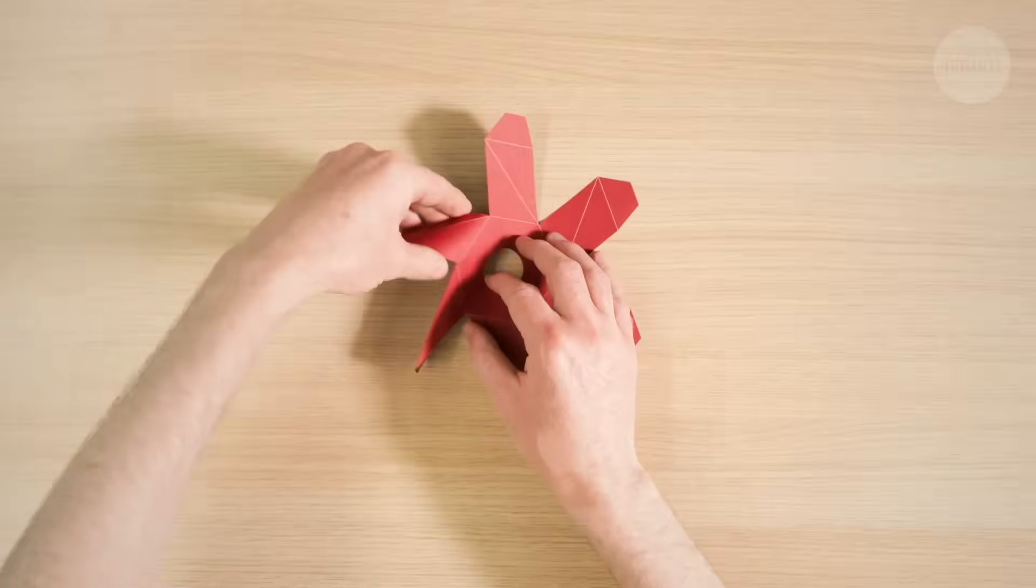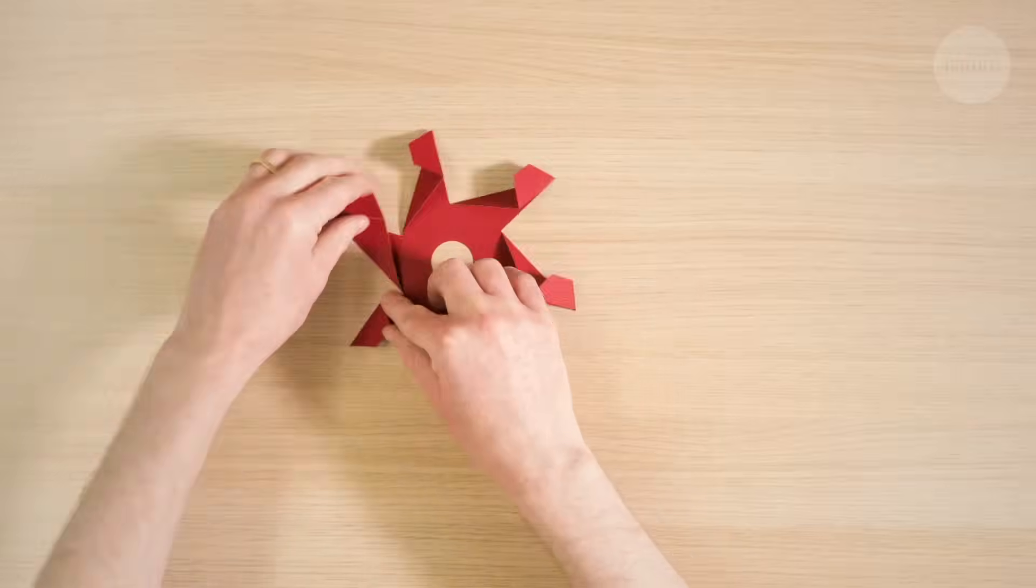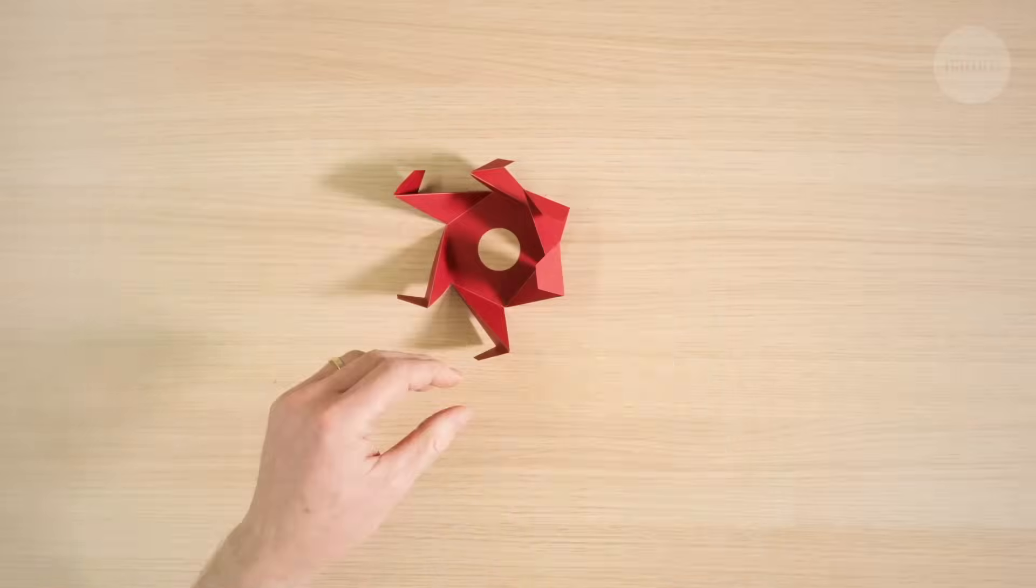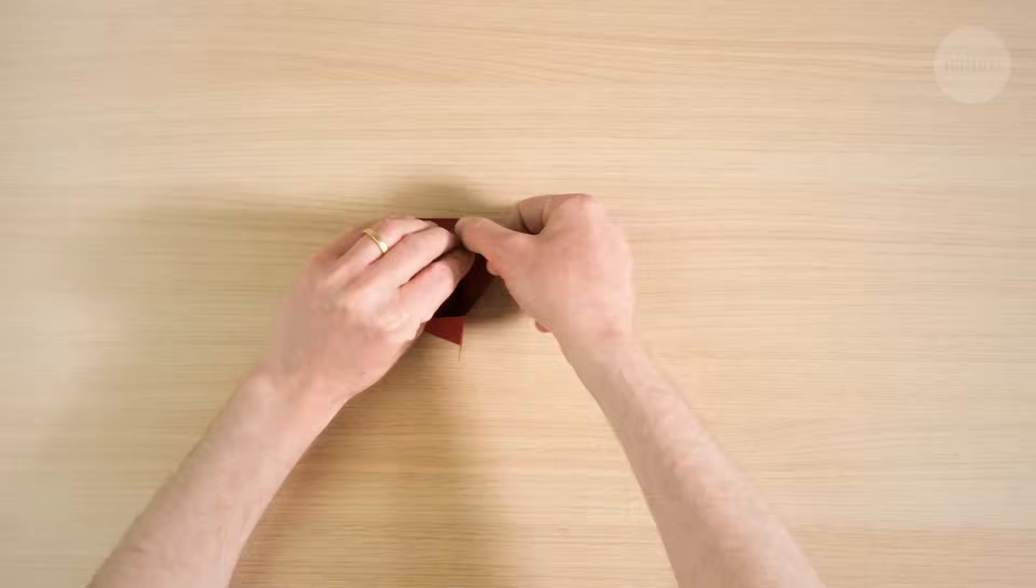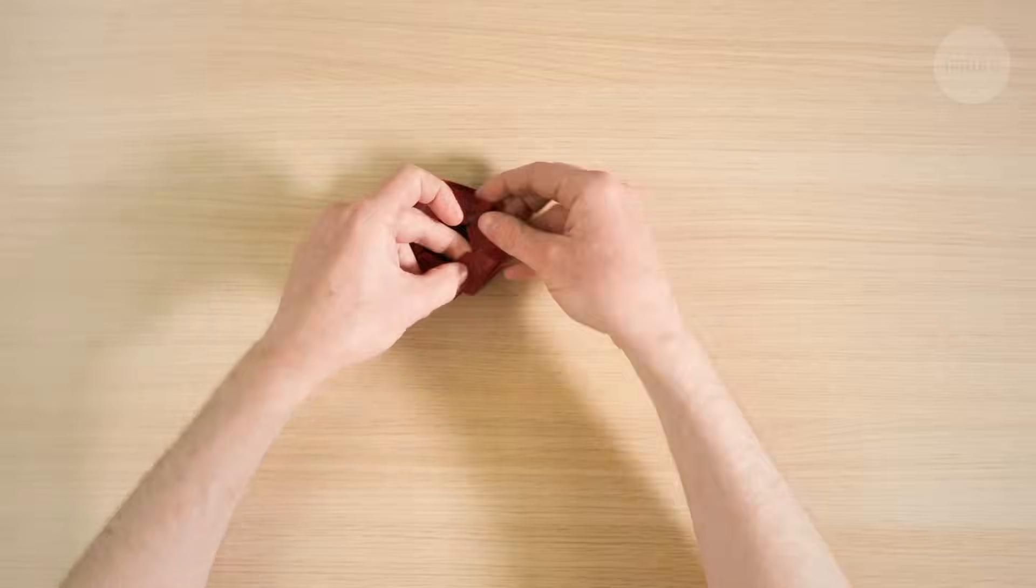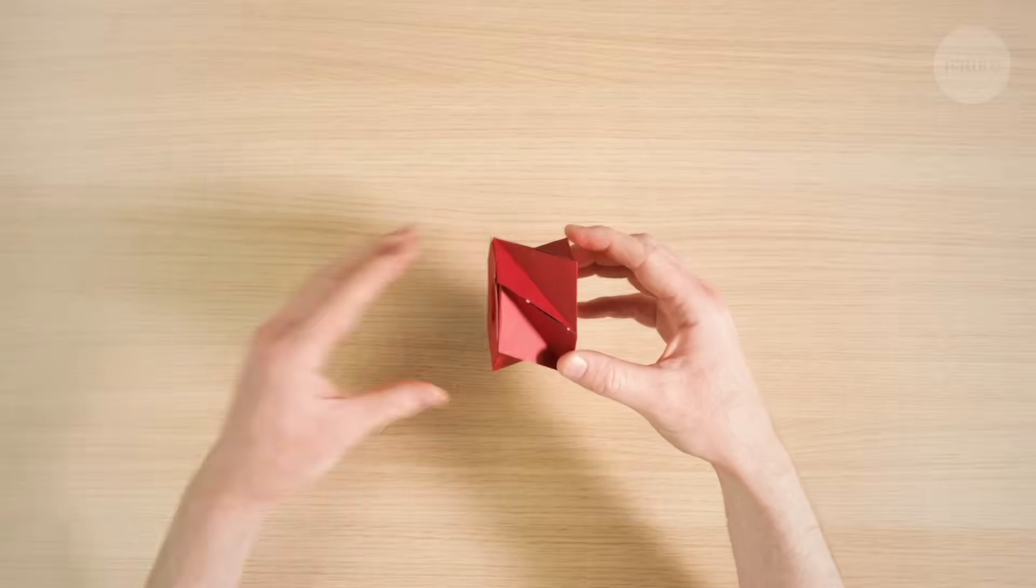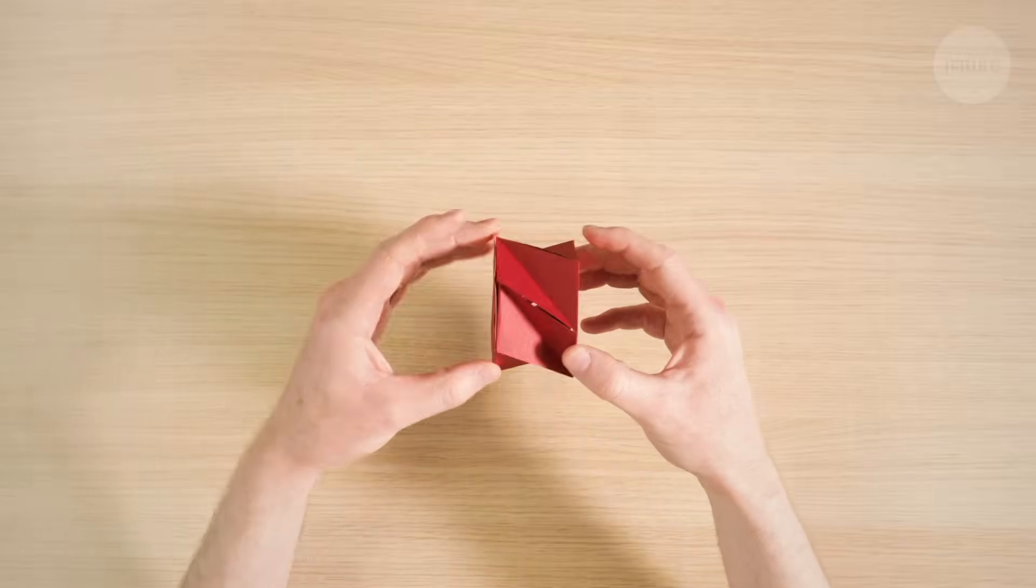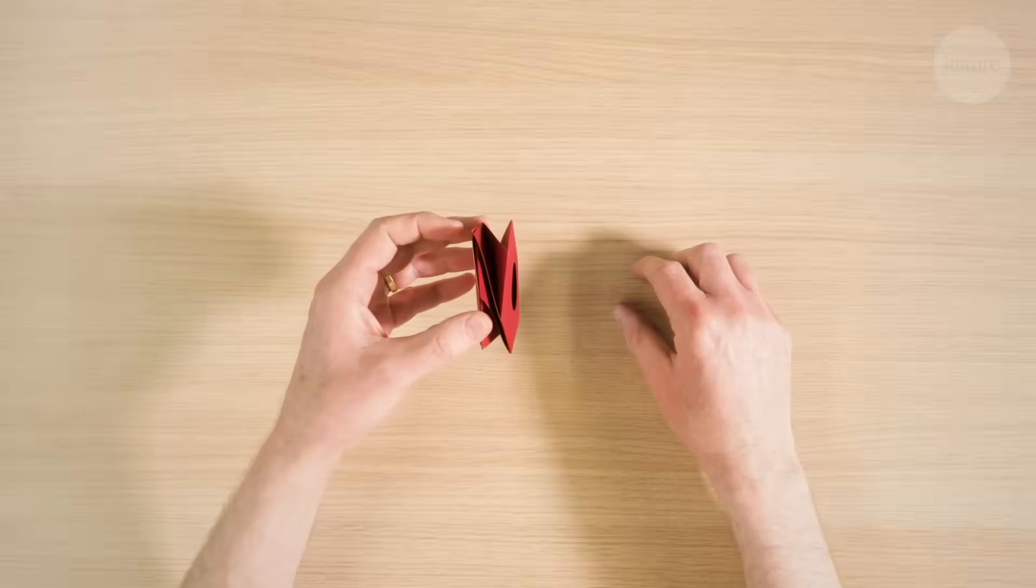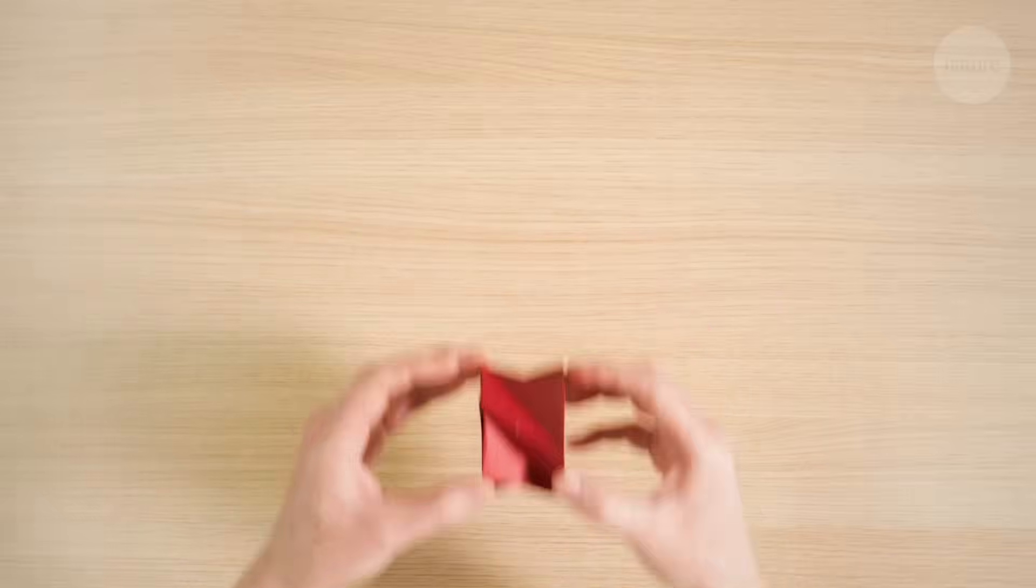For example, it gives the Kresling towers the property of bistability. That means there are two stable states that the tower can take without needing extra force to hold it in place. Open or closed. Up or down. One or zero.